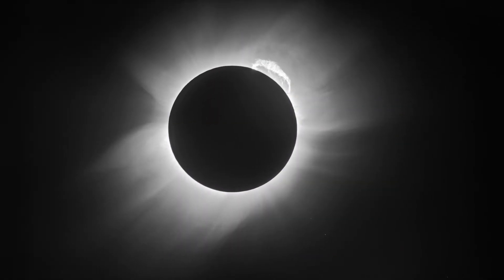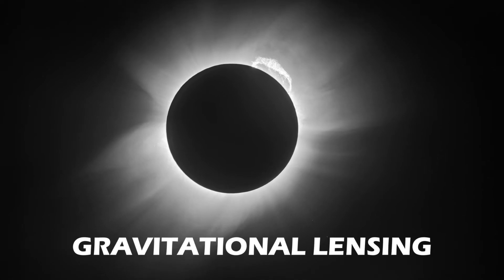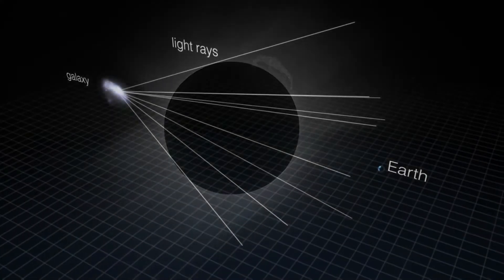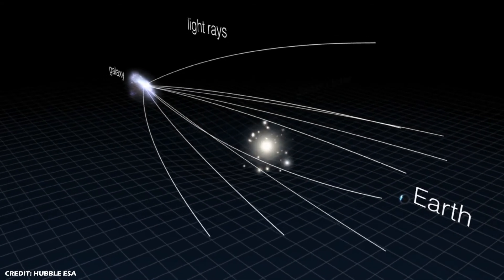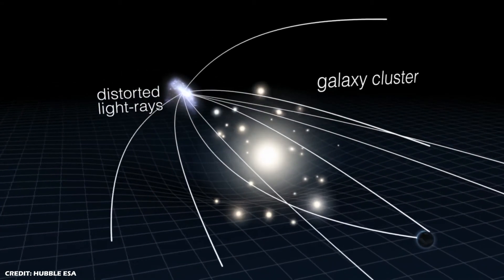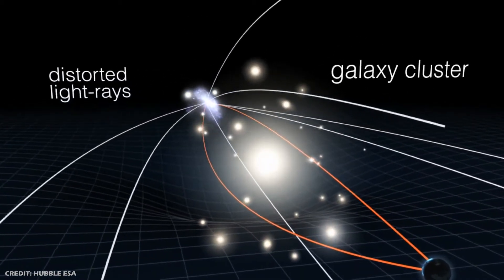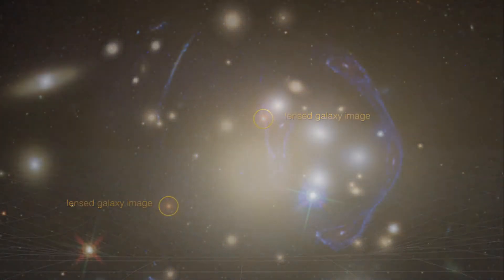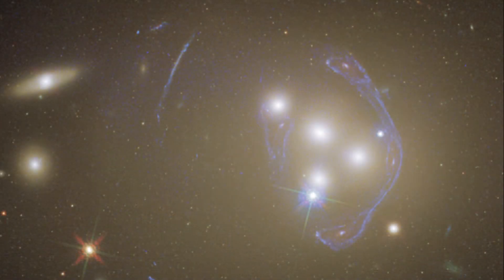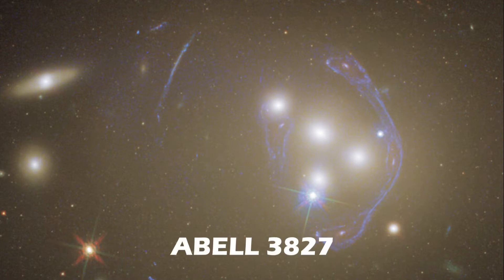This phenomenon came to be known as gravitational lensing, where light from a background object is bent or distorted due to the gravity of a foreground object. This can produce some bizarre-looking images in deep space. For example, what you see here is the lensed image of a distant spiral galaxy being distorted by the gravity of the foreground cluster of elliptical galaxies known as EBL 3827.